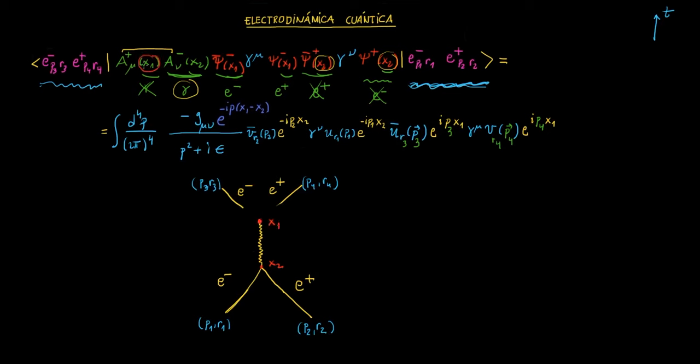Esto se ve aquí. Pero, ¿qué ocurre en x1? Pues fijaos que en x1 lo que ocurre es que se crea un positrón, y también se crea un electrón. Por tanto, el seleccionar estos de esta forma es equivalente a este dibujito, a este diagrama de Feynman.